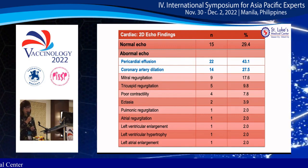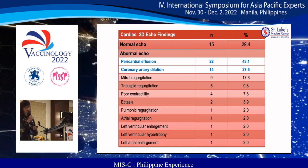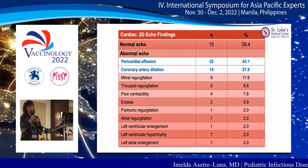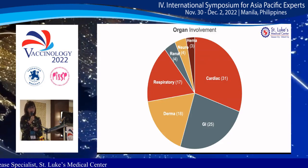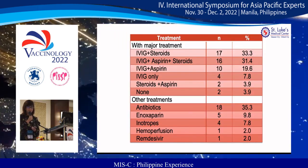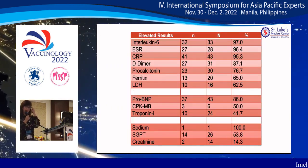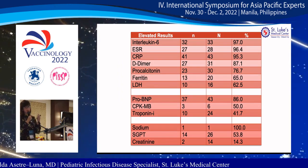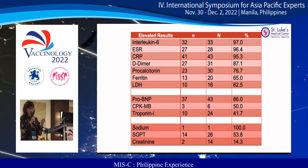The majority had abnormal echocardiographic findings; the most common were pericardial effusion and coronary artery dilation. Around 8% had poor myocardial contractility, and most of these cases were seen in the ICU. The most commonly involved organs were cardiac, gastrointestinal, and mucocutaneous. Among laboratory tests, interleukin-6, ESR, and CRP had the highest sensitivity, while among cardiac markers, ProBNP had the highest sensitivity.